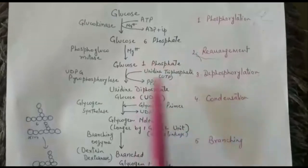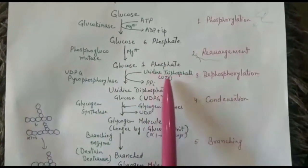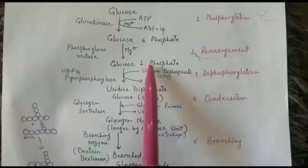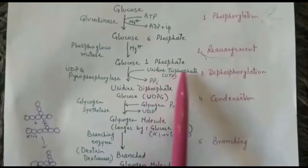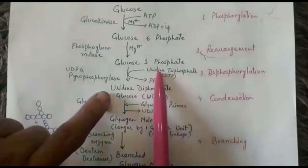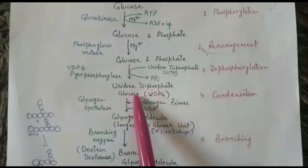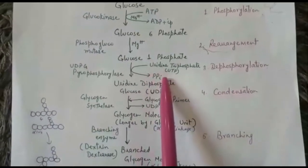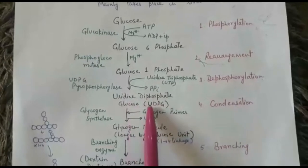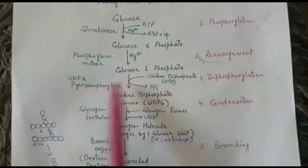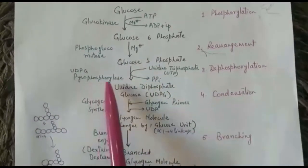The next step is dephosphorylation, but it involves the participation of uridine triphosphate (UTP). Uridine triphosphate loses one phosphate, and one phosphate also detaches from glucose, meaning a pyrophosphate group is removed. UTP, after losing its phosphate, changes into uridine diphosphate (UDP), which then combines with glucose to form UDP-glucose. The name of the enzyme is UDP-glucose pyrophosphorylase, because it involves the removal of a pyrophosphate group.